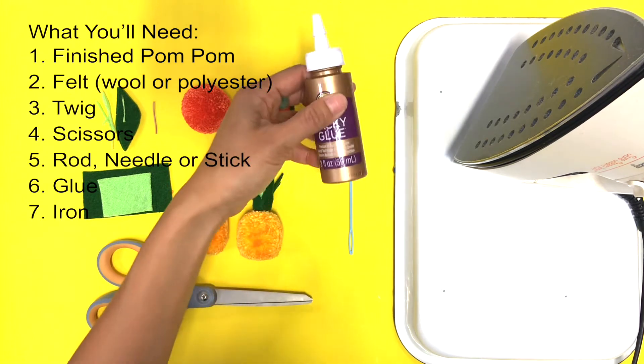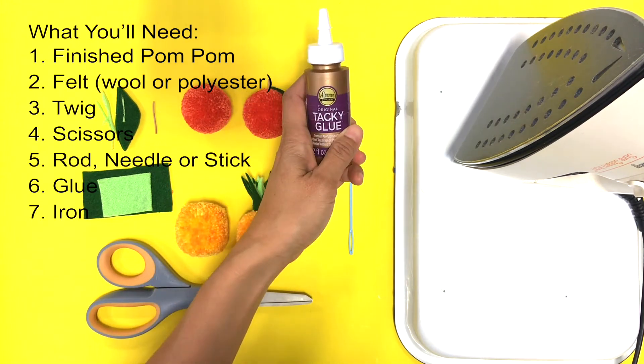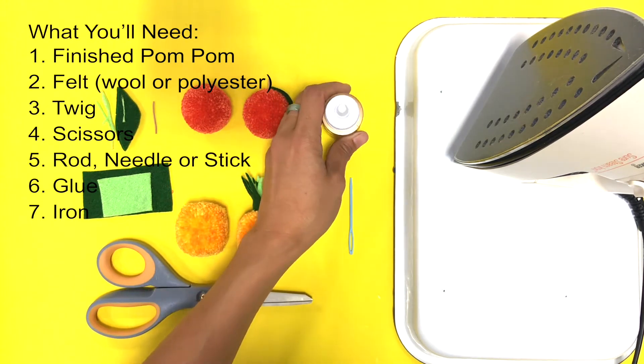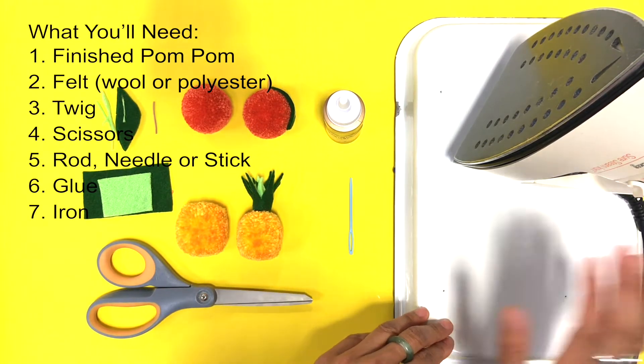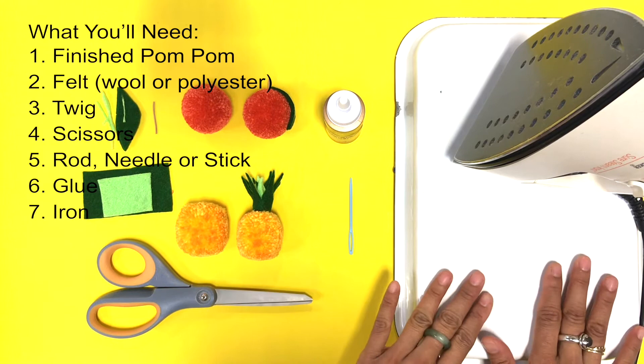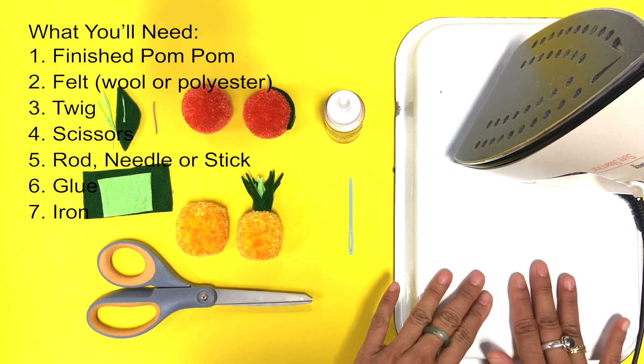You'll need a pair of scissors, a rod or some sort of needle to help you place your glue, some tacky glue - I like this brand Aileen - and an iron just set to regular iron, no steam, and maybe a surface to be able to iron on.